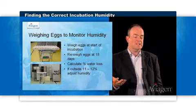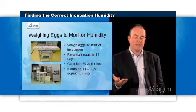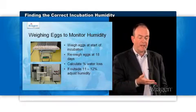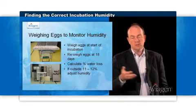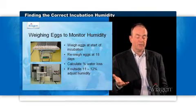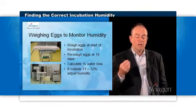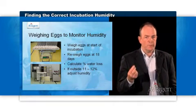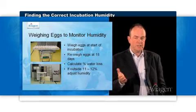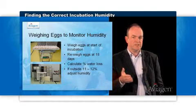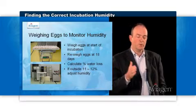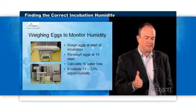We can measure this quite easily by weighing eggs, and we only need to weigh whole trays of eggs to do this. We weigh eggs at the start of incubation, re-weigh them at 18 days at transfer, and then calculate the water loss. We must make sure that we measure at 18 days, so if we do a transfer at 19 or 17 days, we need to correct the value that we calculate so that we are comparing at 18 days.